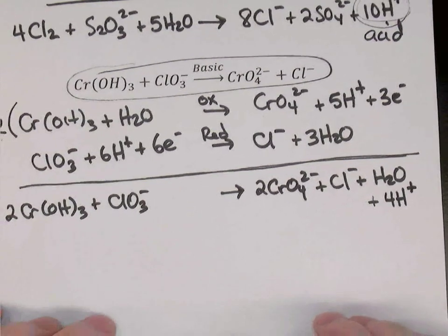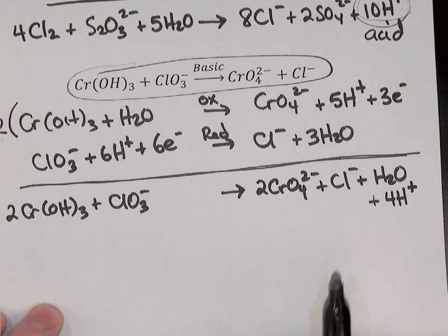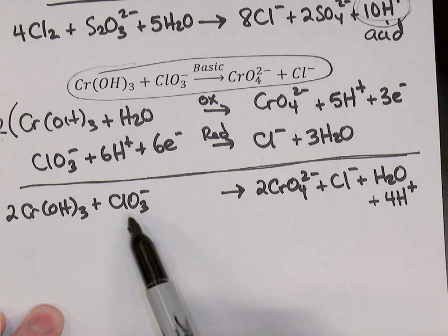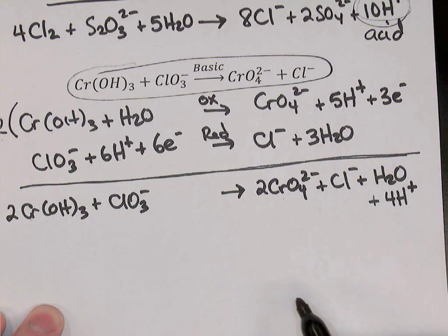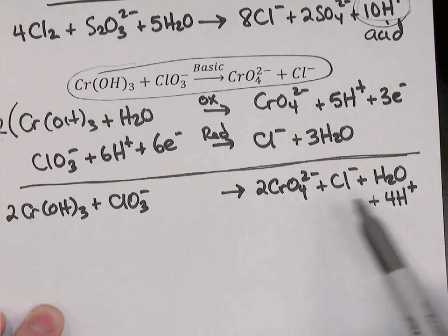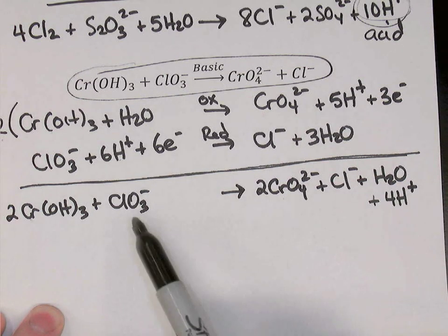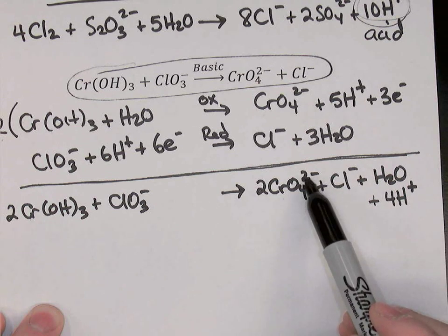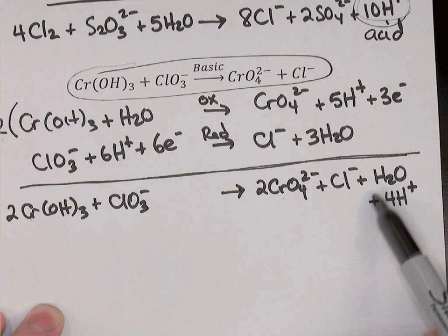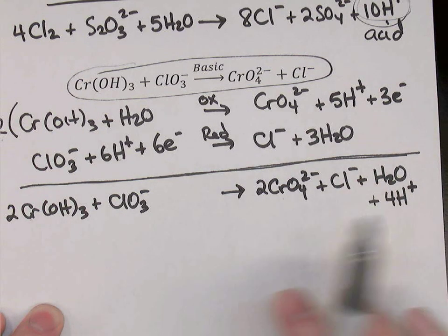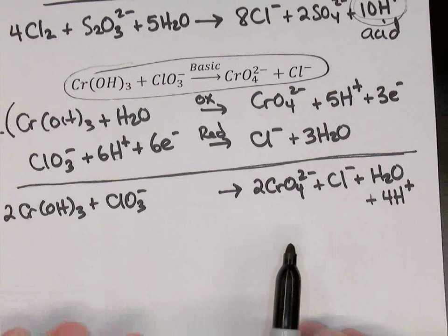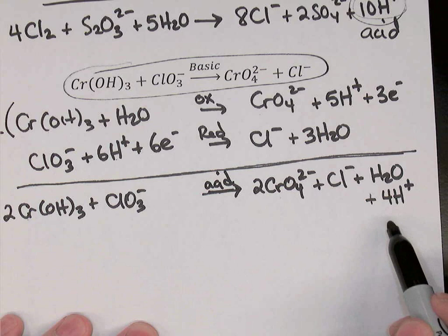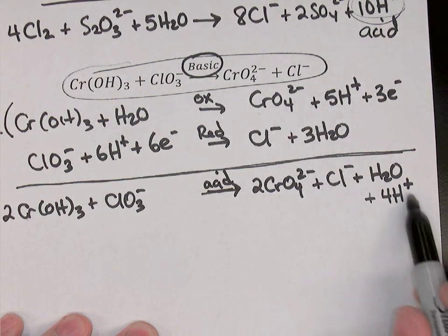This is our balanced equation in acid solution. Checking: 2 chromiums each side; 9 oxygens each side (3×2+3 on left, 2×4+1 on right); 6 hydrogens each side (3×2 on left, 4+2 on right); 1 chlorine each side; and charges of −1 on both sides (−1 left; 2×−2 + −1 + 4 positives = −1 right). The equation is completely balanced — but it has H⁺, so it's currently in acid form.